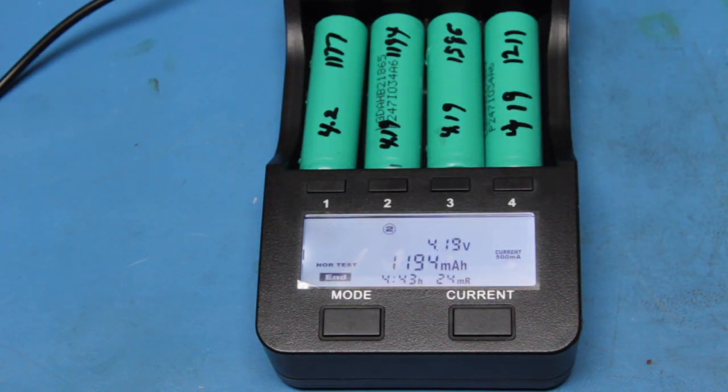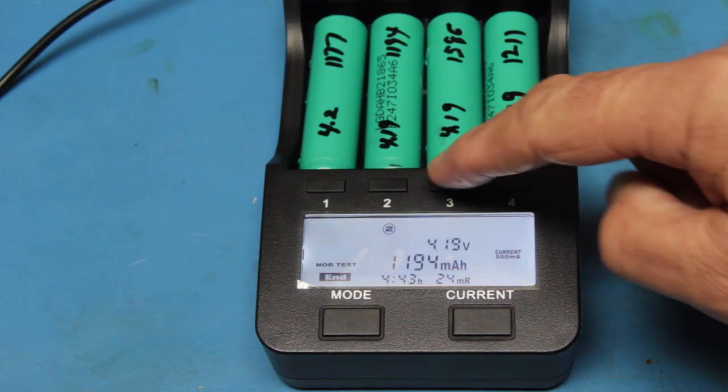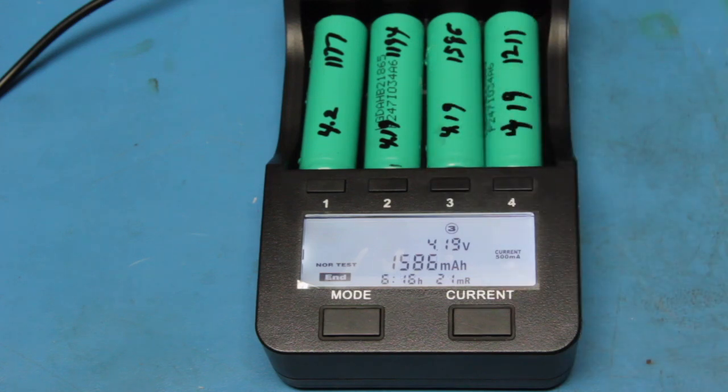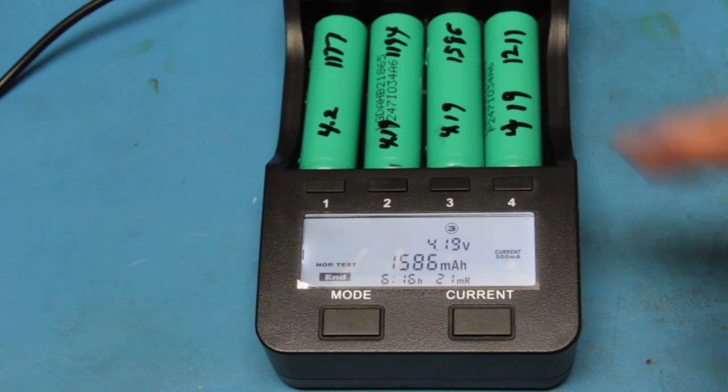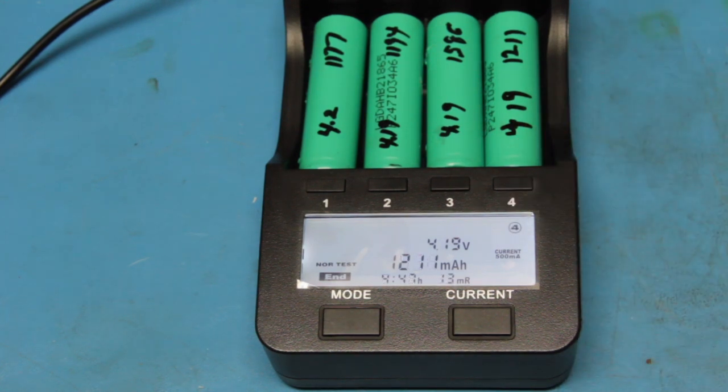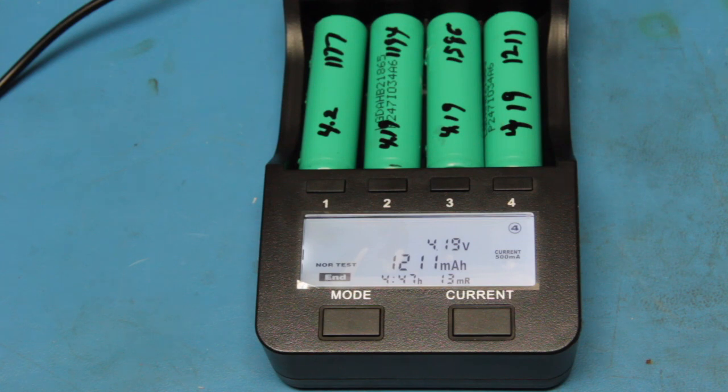The second battery is 4.19 volts, 1194 milliamp-hours. The third battery is 1586 milliamp-hours, 4.19 volts. And the fourth battery is 4.19 volts, 1211 milliamp-hours.